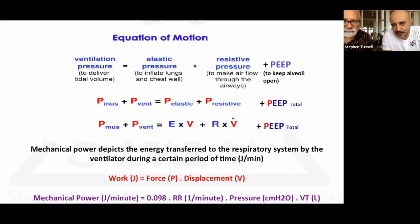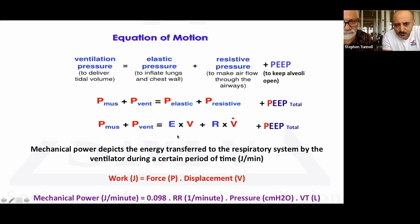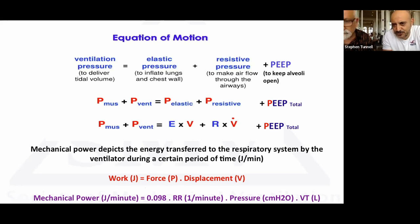Quick introduction about mechanical power: it's based on the equation of motion, where ventilator pressure equals elastic pressure plus resistive pressure plus PEEP pressure. The total pressure P_mos + P_vent overcomes elastance times volume, resistance times flow, plus PEEP. Mechanical power depicts the energy transfer to the respiratory system during a certain period of time, measured as joules per minute. Work in joules equals force (pressure) times displacement (volume), so mechanical power is essentially volume times pressure — with a correction factor of 0.098 multiplied by respiratory rate, then multiplied by pressure times tidal volume.